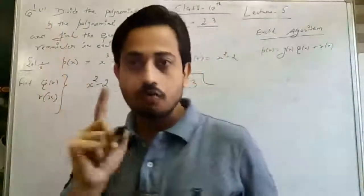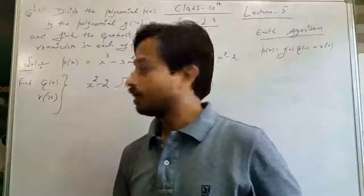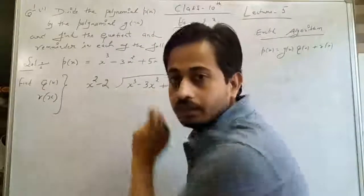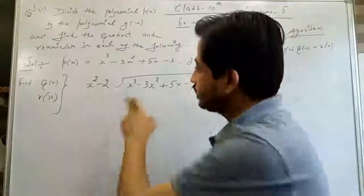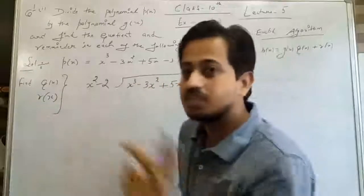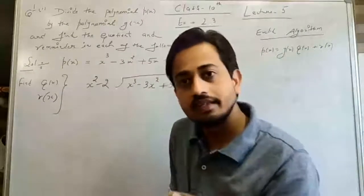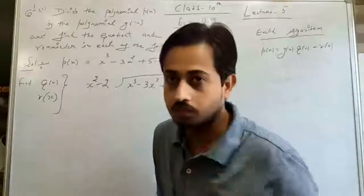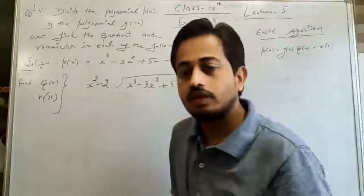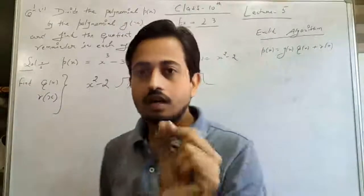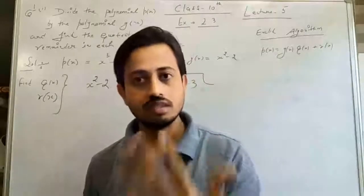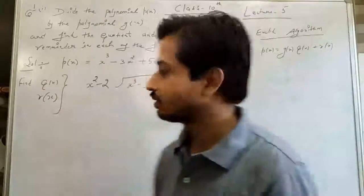I am taking the first part. First, keep these points in mind: whenever you write your polynomial, make sure no term is missing. Here the highest power is 3, then 2, then 1, then 0 — no missing terms. If there is a missing term, write it with a coefficient of 0. Don't try to skip any term, because missing a term will make your calculations go wrong.